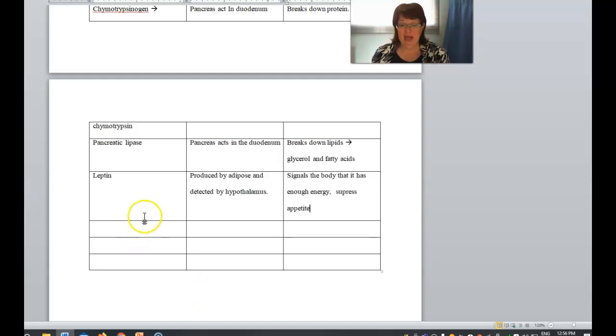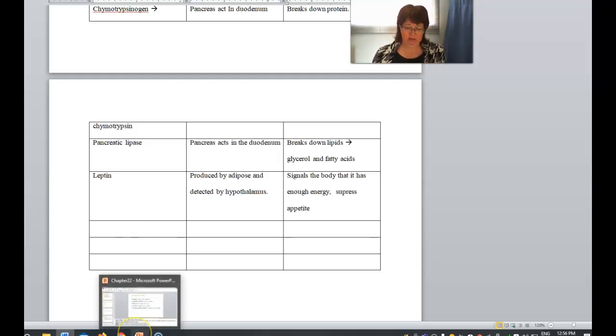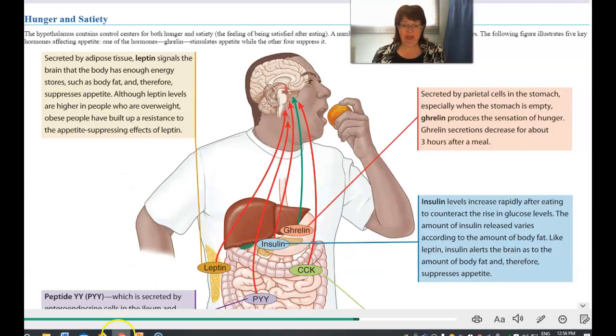Produced by adipose and detected by hypothalamus, and the action is to suppress appetite. It signals the brain that the body has enough energy, and therefore it should suppress appetite. That's leptin.